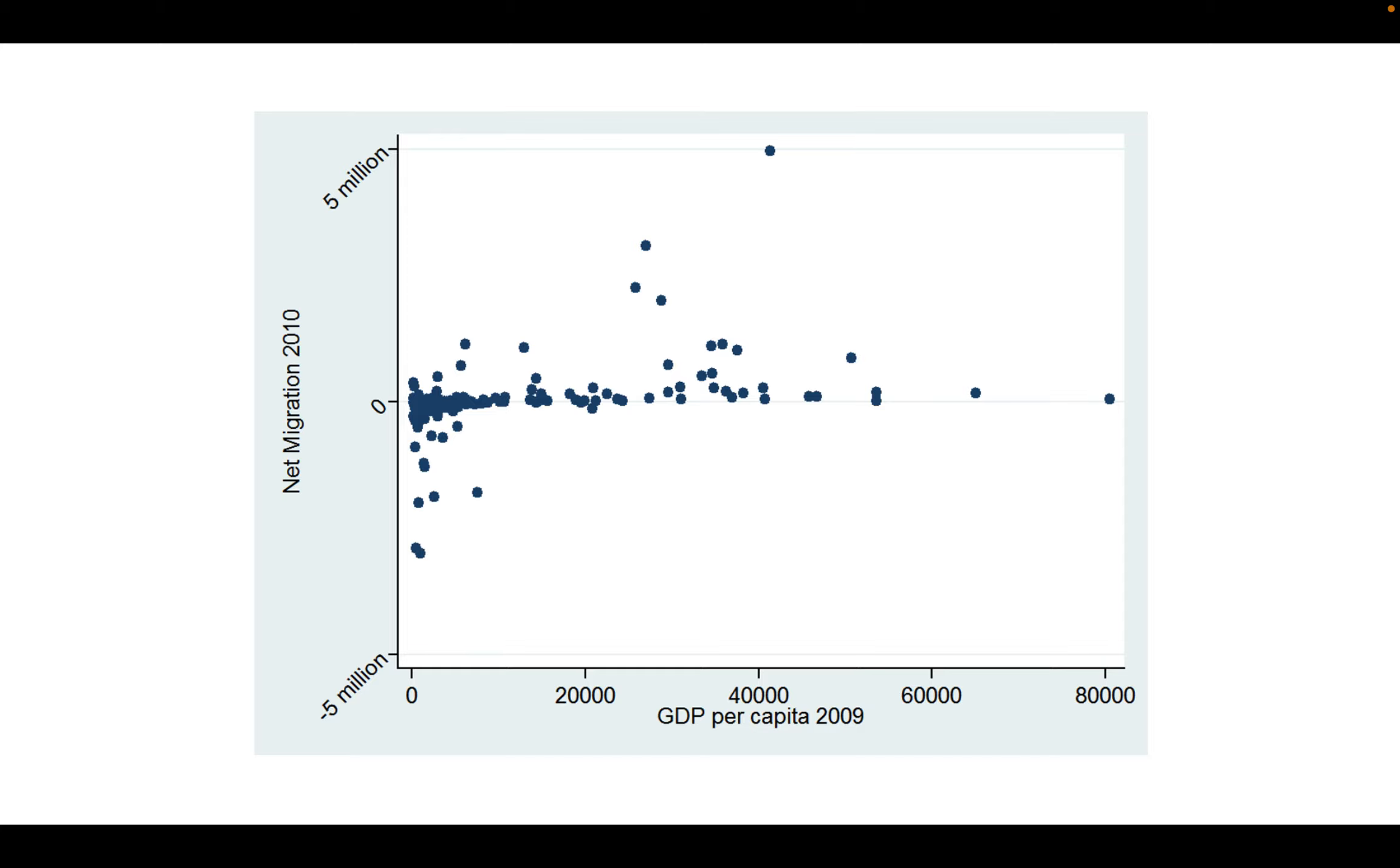And then we have various migration statistics. Some countries experience a lot of outward migration, and those would be negative numbers. So it would be interesting to try to trace out this relationship using a scatter plot.